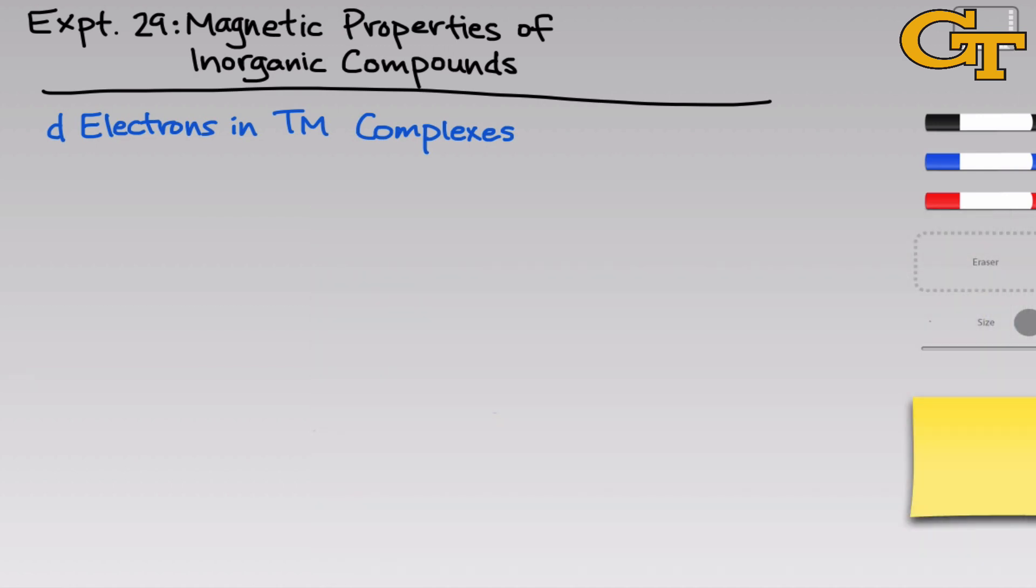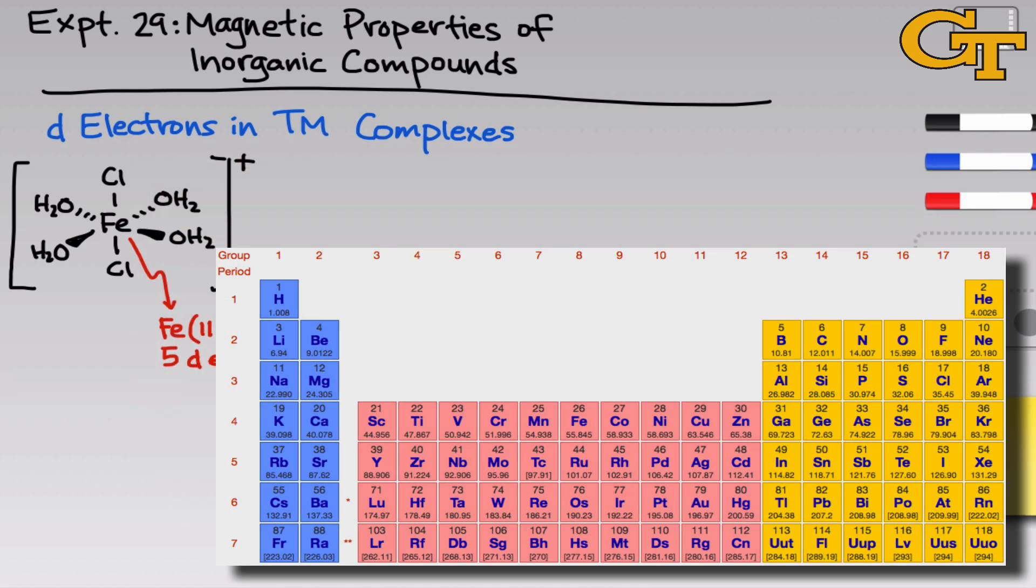Let's begin by thinking about d electrons in transition metal complexes in more detail. These are the valence electrons of the complex, and it's really important to understand these if we want to understand the reactivity and other properties of transition metal complexes. I've drawn up here an example. We have an iron center at the middle surrounded by four water molecules with two chlorines across from each other within the complex. If we think about the charges of the individual ligands and the overall charge of the complex, we can see that this is an iron three center. This is iron three plus. Iron three plus has five d electrons.